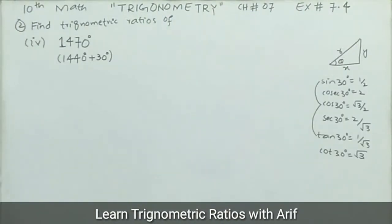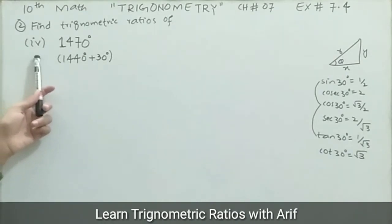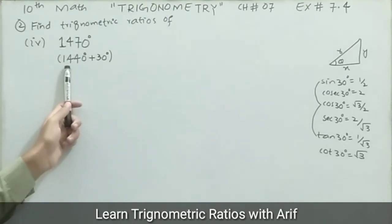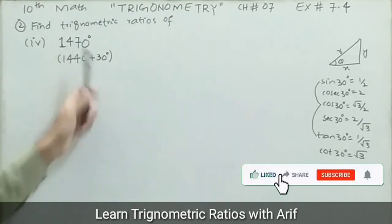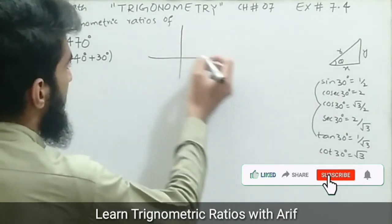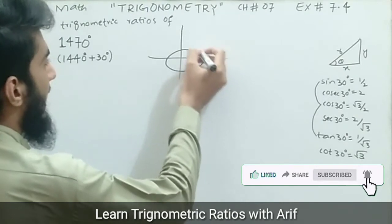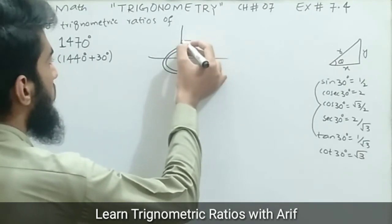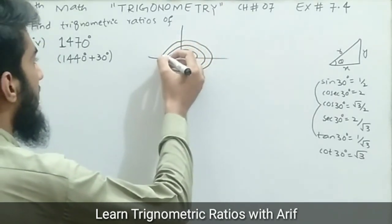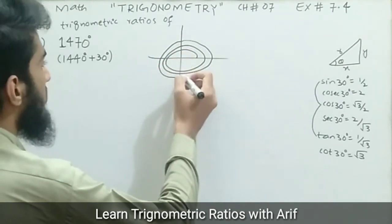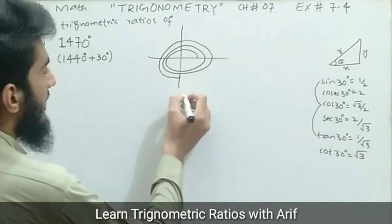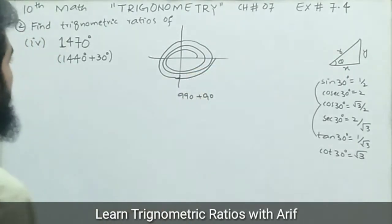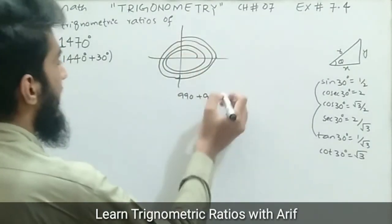Now for part four: finding the trigonometric ratios of 1470 degrees. We can write 1470 as 1440 plus 30, and 1440 equals 4 times 360 degrees. Using the Argand diagram, each full rotation is 360 degrees: 360, 720, 1080, 1440 — four complete rotations — and then an additional 30 degrees. So 1470 degrees is equivalent to 30 degrees after four full rotations.